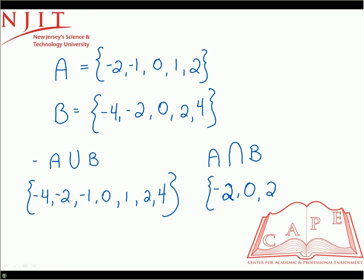In this case, which numbers do they have in common? We have -2, 0, and 2. Those are the three elements that both sets have in common, which will be the intersection.